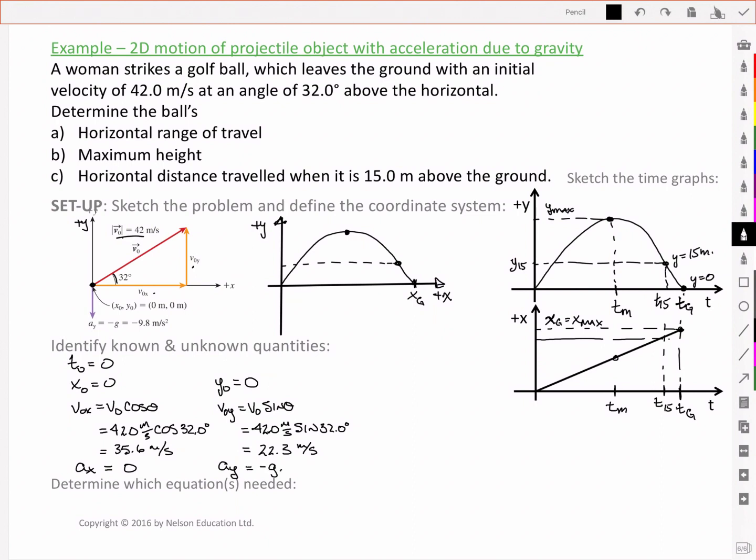So what are we trying to solve for? In part a, we're interested in time tg, which we don't know. But we do know at that point that we have a position of 0. And we're trying to find the x at that position. Or for part b, we're looking for y equal to y max at an unknown time tm. But we do know here that we'll have a velocity of 0. And lastly, in part c, we're looking for some time t15, 1.5 I'll call it. Where y is a positive 1.5 meters. And we want the horizontal distance at that location.